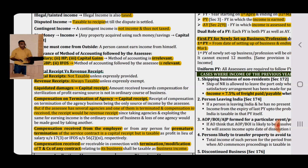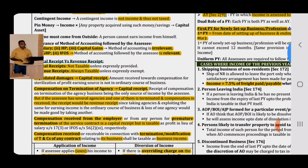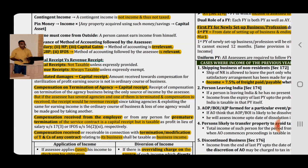Liquidated damages are a capital receipt and are not taxable. Compensation on termination of agency is generally treated as a capital receipt and hence not taxable. But if the assessee has several agencies and only one of them is terminated and compensation is received, that receipt would be treated as a revenue receipt, and revenue receipt is always taxable.